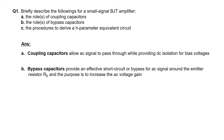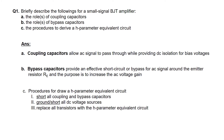For part C, on the procedures of deriving the H-parameter equivalent circuit, there are three steps. The first step is actually to short all coupling as well as bypass capacitors, followed by grounding or shorting all DC voltage sources. And lastly, to replace all transistors with the H-parameter equivalent circuit.